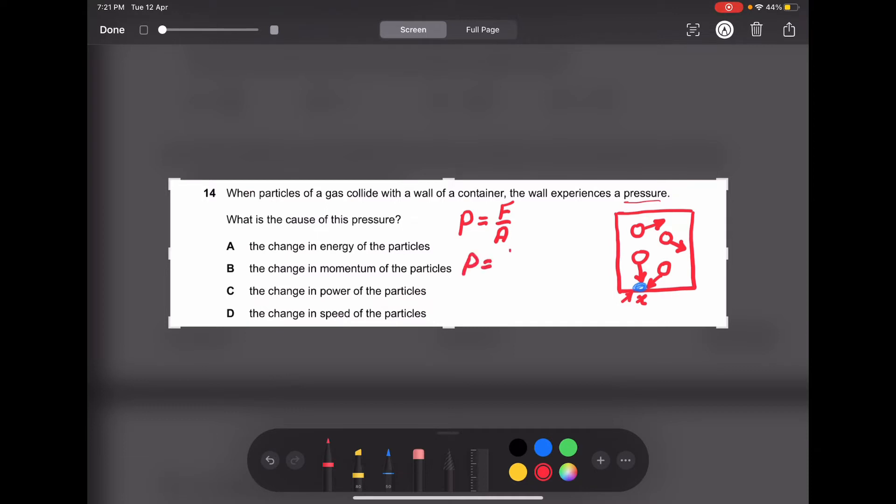Pressure equals F, which is mass times acceleration, divided by the cross-sectional area.